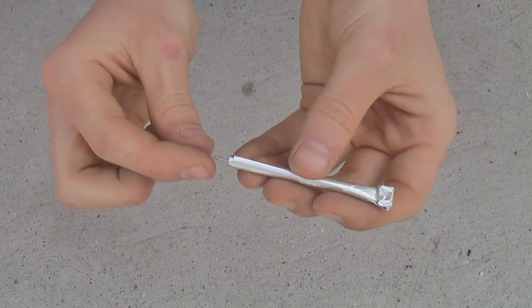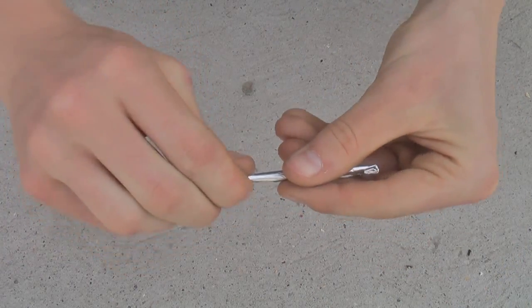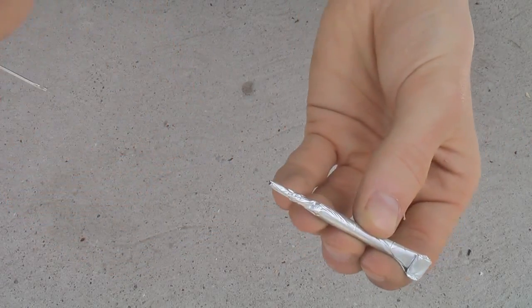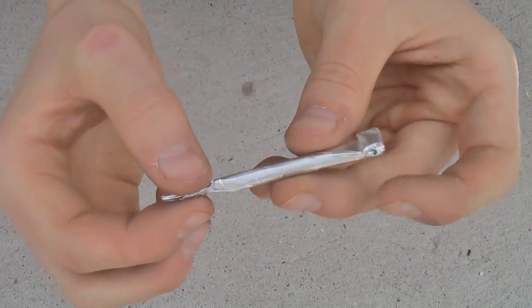Now take your smaller object and rest it inside your tube so that it's touching the first match head inside the tube. Now you can take your aluminum foil and wrap it up around this object. When you're done, you can remove the object and your match rocket is almost complete.